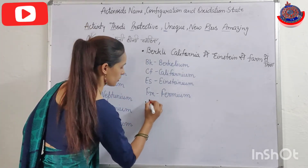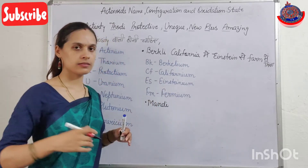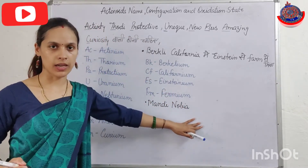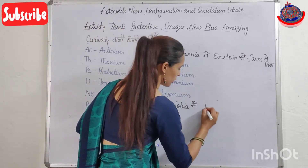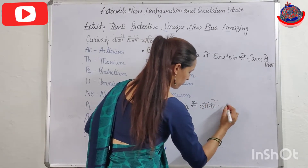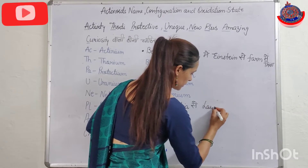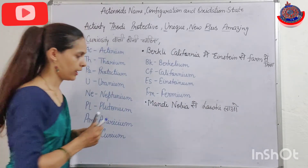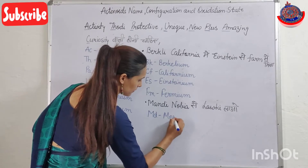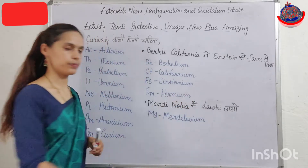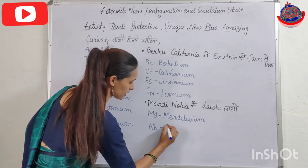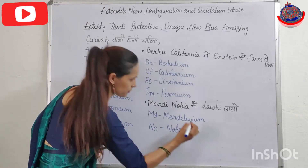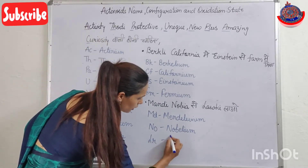Now the third trick: 'Mandi, Nobia se, Law ki Lao.' There are different types of mandis — sabji mandis. So: MD is Mendelevium, NO is Nobelium, and LR is Lawrencium.